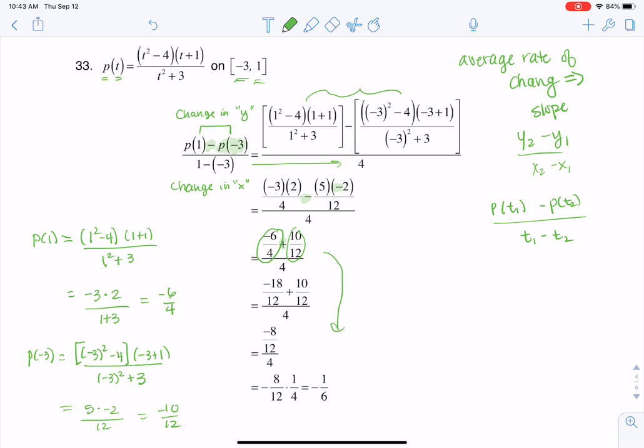And from here on out, this is us manipulating fractions. You can manipulate the fractions by hand or run them on your calculator. But once you crunch all of these numbers, your average rate of change is negative 1 sixth. So there's number 33.